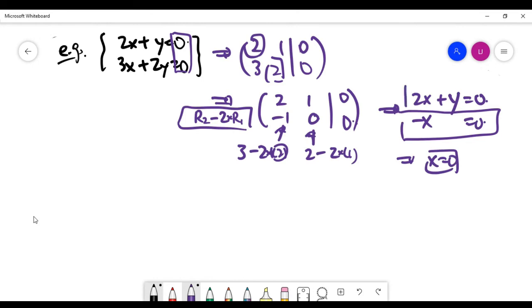x must be zero, and of course, based on the first equation, y must be zero. You can do it yourself. It means this system, as we expect, has at least one solution, which is the zero solution.